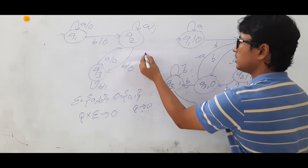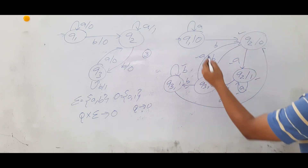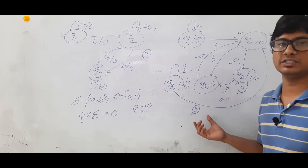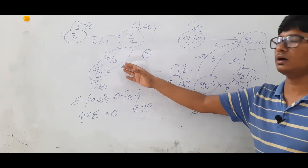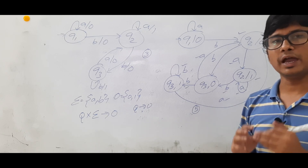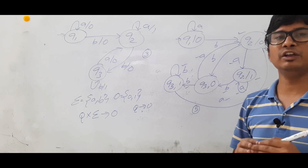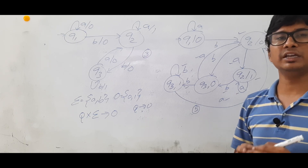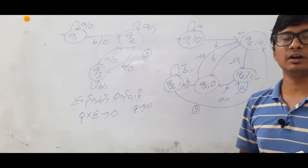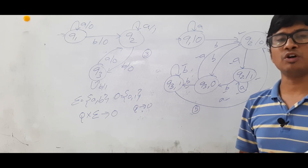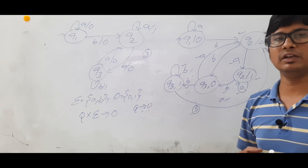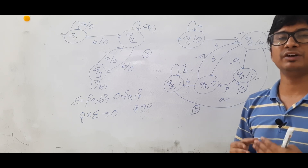Now if you see that in the Mealy machine you have 3 states. In the Moore machine how many states are there? 1, 2, 3, 4, 5 — so maximum it can have 6 states but here we got 5 states only. I hope you have understood how I converted the given Mealy machine to a Moore machine. If you don't understand, don't worry — I will take another example. If you have any doubts feel free to ask in the comment section. I will clear your doubts in less than 24 hours. Positive feedback will motivate me, suggestions will help me improve. Please subscribe to my channel for regular updates. Thank you so much.